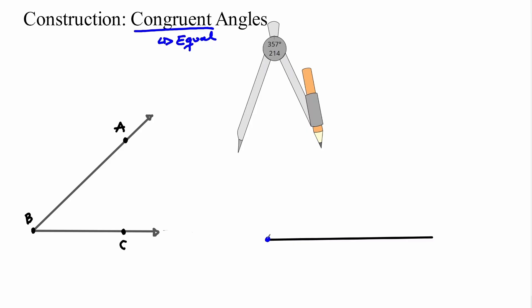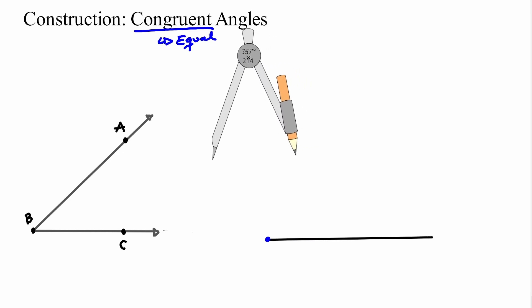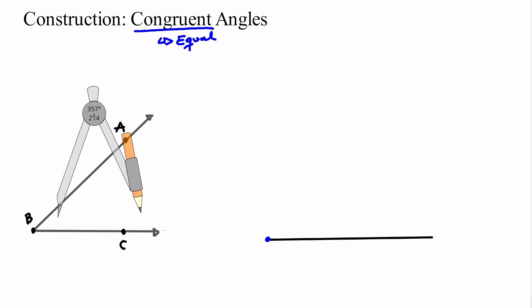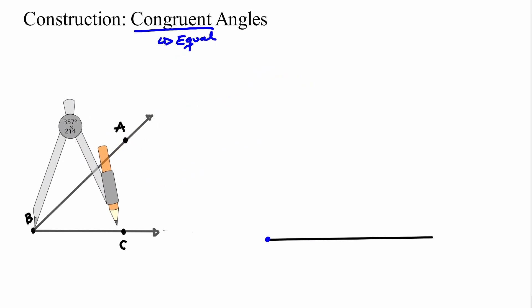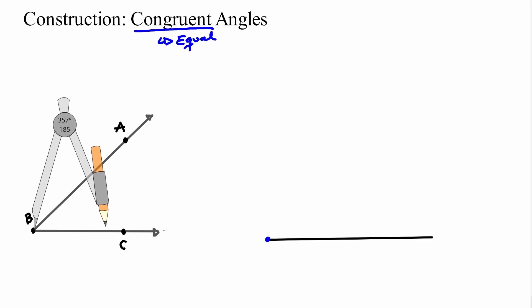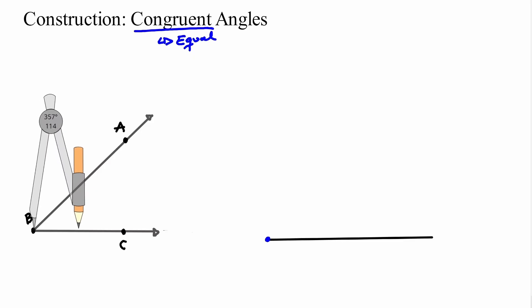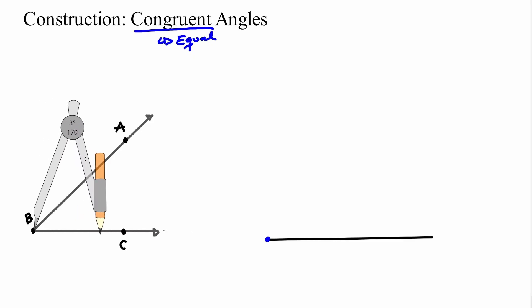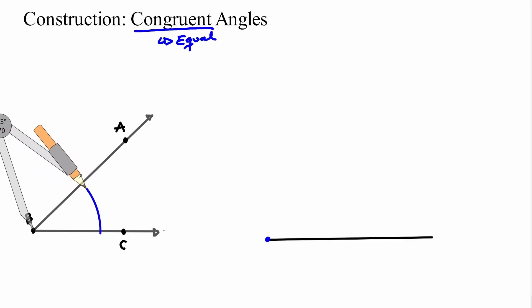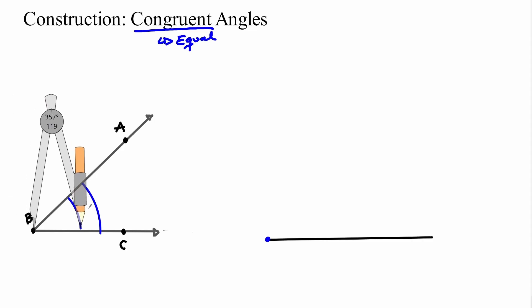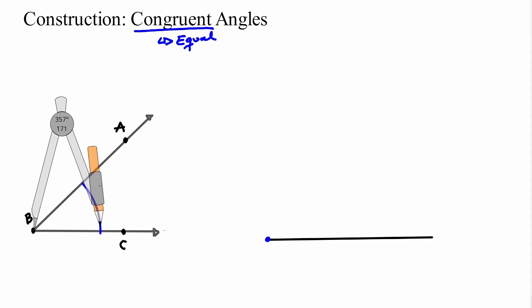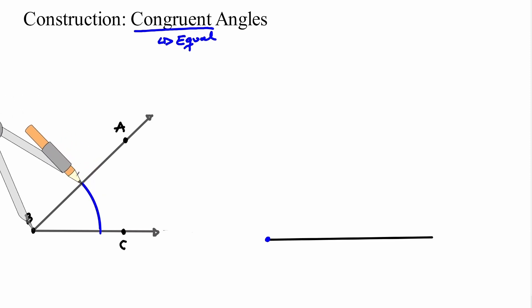My second step: I'm going to get my compass and the metal leg — notice that I'm placing it on the vertex of the given angle. And this other leg with my pencil on it, I just want to open it far enough and create an arc. It doesn't matter how far or how close you are from the vertex. The only thing that matters is that you are creating some arc in your given angle.